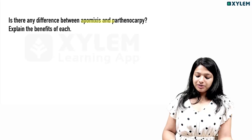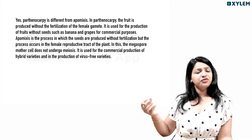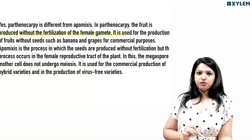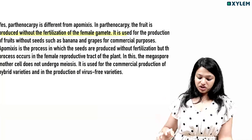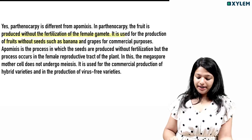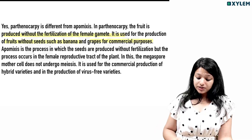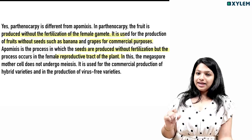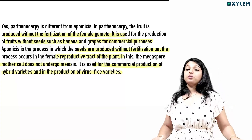Is there any difference between apomixis and parthenocarpy? Explain their benefits. Parthenocarpy is different from apomixis. Parthenocarpy: fruit is produced without fertilization of the female gamete, used for commercial production of seedless fruits such as banana and grape. Apomixis is the process in which seeds are produced without fertilization; the megaspore mother cell does not undergo meiosis. It is used for commercial protection of hybrid varieties and virus-free varieties.